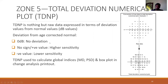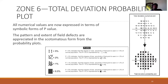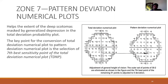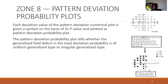Global indices — mainly mean deviation and pattern standard deviation — are derived from the total deviation numerical plot. The total deviation probability plot assigns a probability value to the numerical data. The pattern deviation numerical plot is derived by taking the seven best sensitivity points and adding that value to all numerical values in the total deviation plot, eliminating generalized depression so that localized scotomas are highlighted. The same probability scale is then applied to create the pattern deviation probability plot.